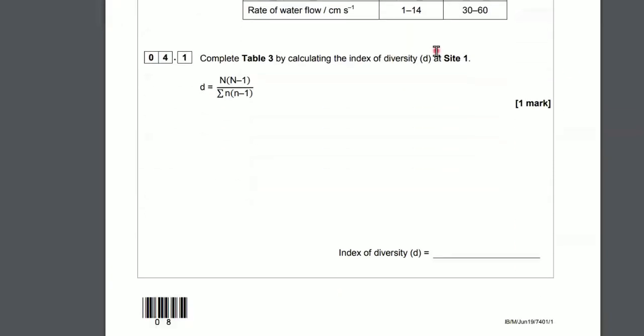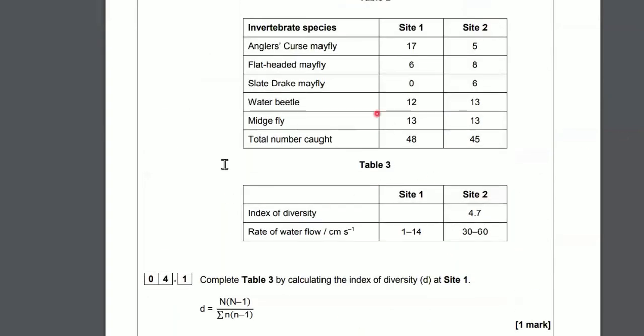We haven't got the index of diversity at Site 1, so we can all guess what we're going to be asked here. Complete Table 3 by calculating the index of diversity at Site 1. We've got to use n times n minus 1 over the sum of lowercase n times n minus 1, and that will give us the diversity. So what does the big N mean? The big capital N is the total number of organisms. Big N equals 48 at Site 1 and 45 at Site 2. I suggest you pause the video, grab some scrap paper, grab your scientific calculator, have a go at this question, and then unpause and watch me calculate it.